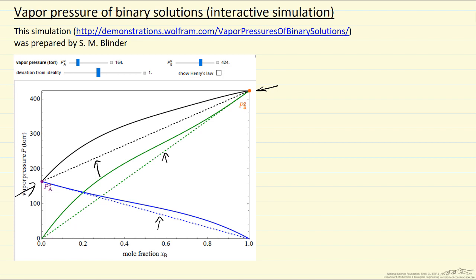In this case, we're looking at a deviation from non-ideal, that's a positive deviation. That means the pressure above the mixture here is greater than that predicted by Raoult's law, because of non-ideal interactions in the liquid phase.